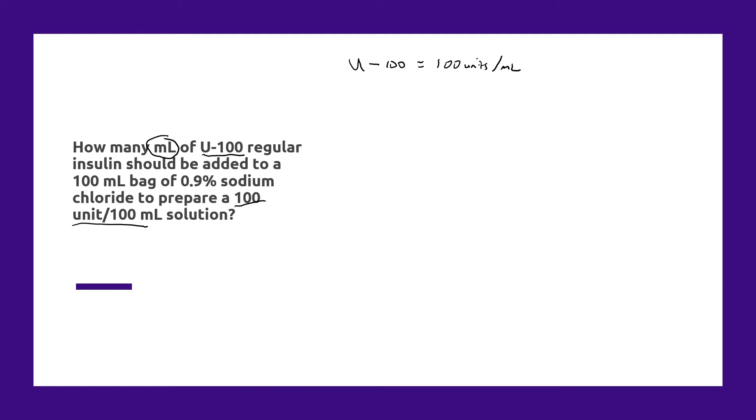Now I'm a big fan, as you all know, of setting up proportions because it can be consistent to solve these types of questions. So essentially what we're trying to figure out is how many milliliters of U-100 insulin do we add to get to this concentration?